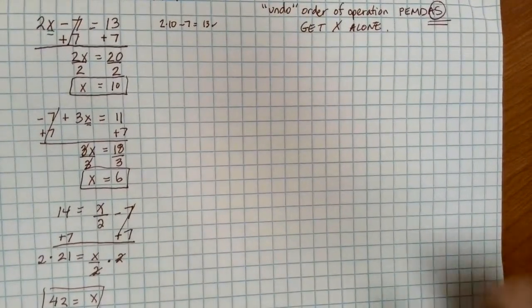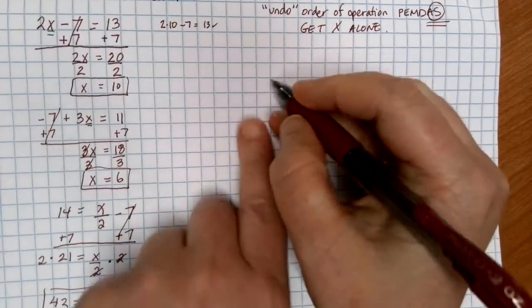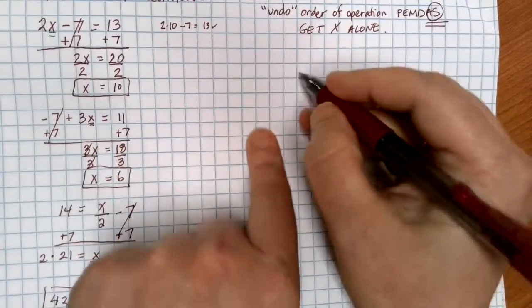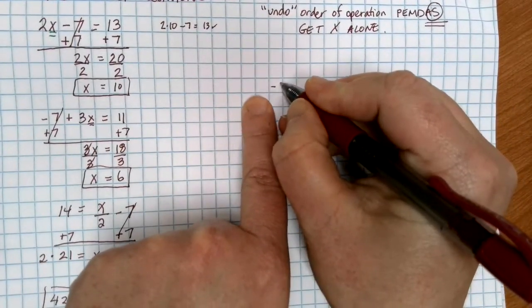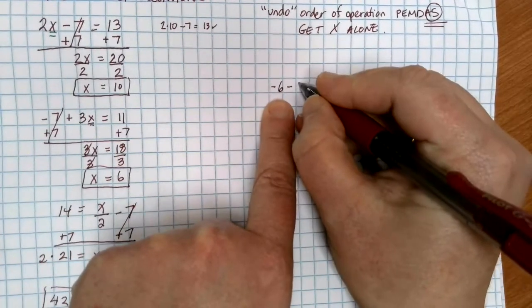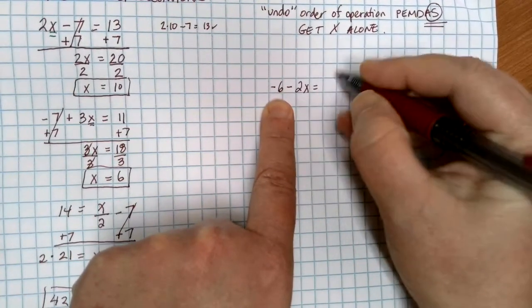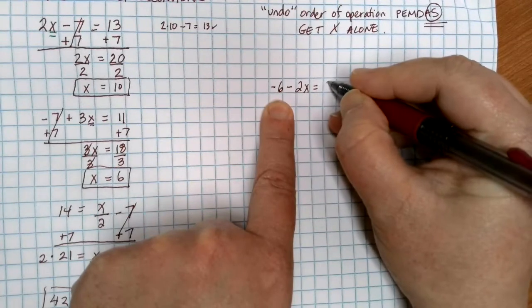Okay. Let's take a look at a couple of problems that have some complications that people sometimes forget about. Let's suppose that I have a negative 6 minus 2x equals 8.